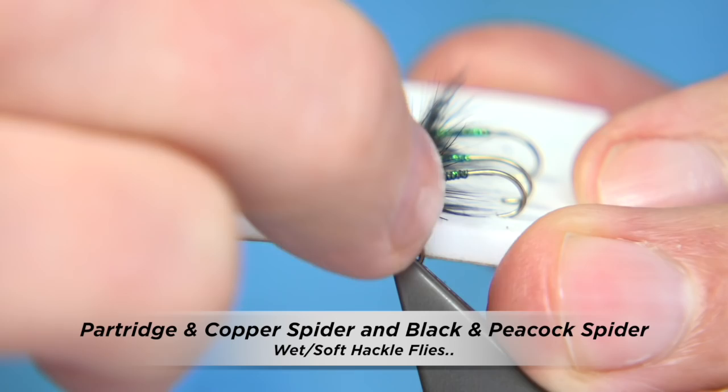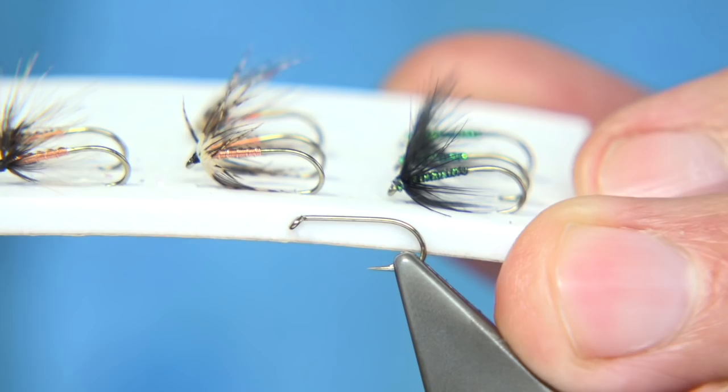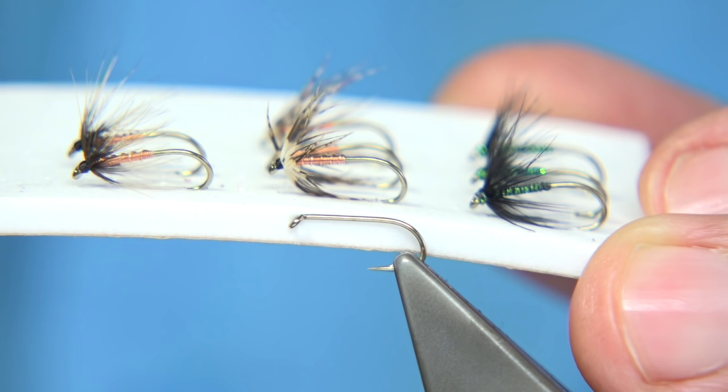This one's just a micro glint thread, which is for the body and I've just tied off with it. And this one here, or both of these are tied with a copper body, and then finished off with a hackle.